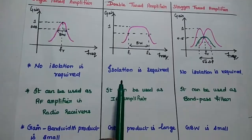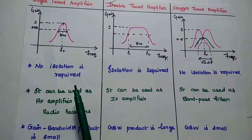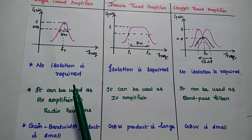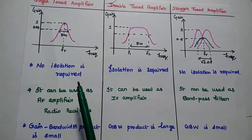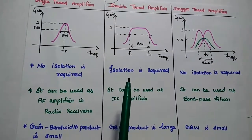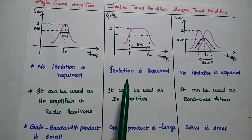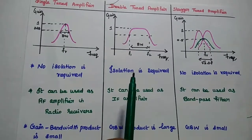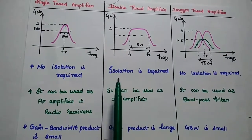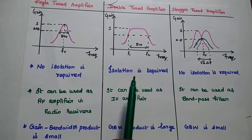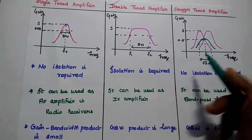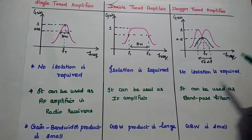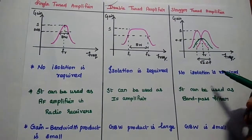There is no isolation needed for the single tuned amplifier in cascaded connection. For the double tuned amplifier, isolation is important to separate the input tuned circuit and the other tuned circuit. There is no isolation required for the stagger tuned amplifier.